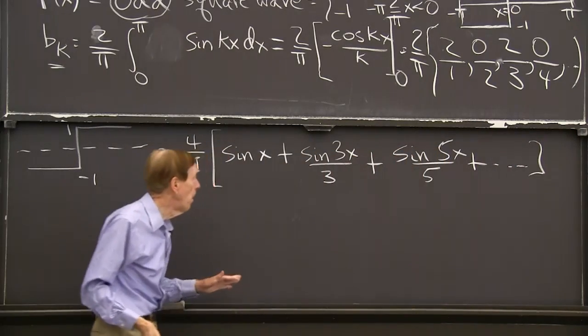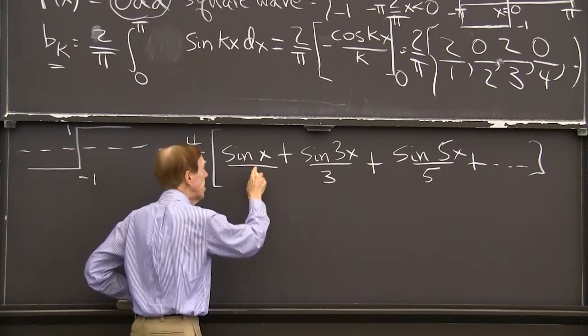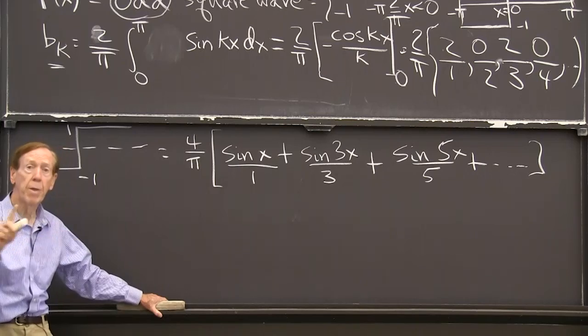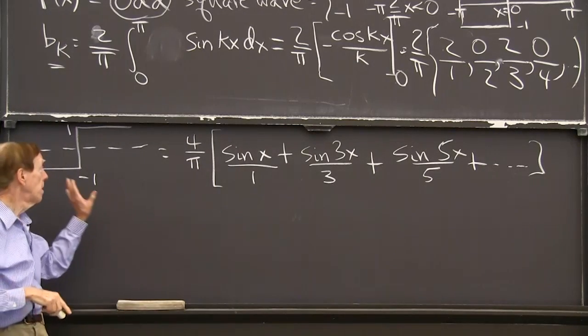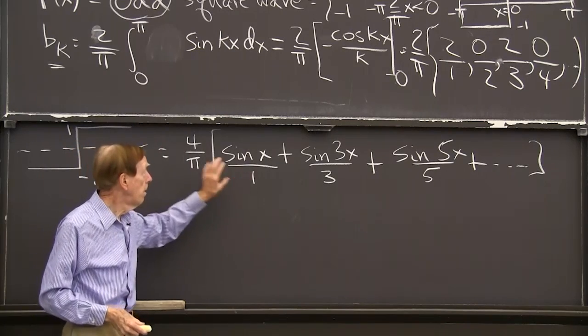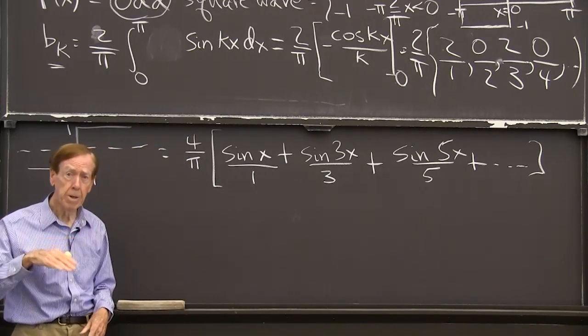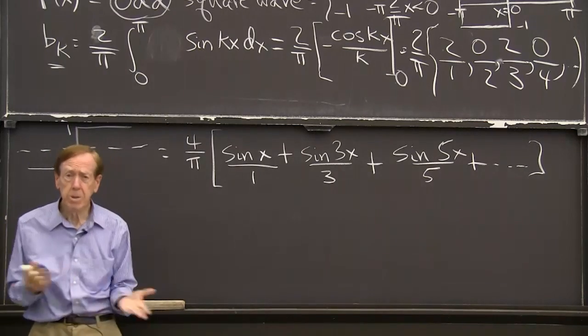That's a kind of nice example. It turns out that we have just the odd frequencies 1, 3, 5 in the square wave. And they're multiplied by 4 over pi, and they're divided by the frequency, so that's the decay. All right. There's an odd function.